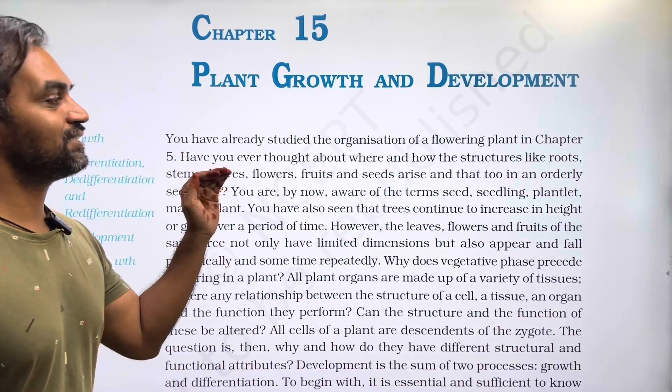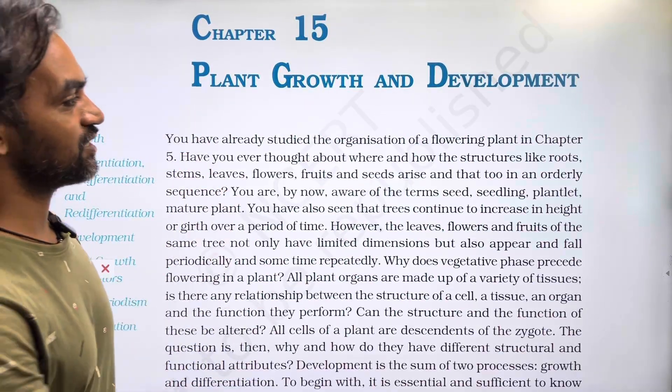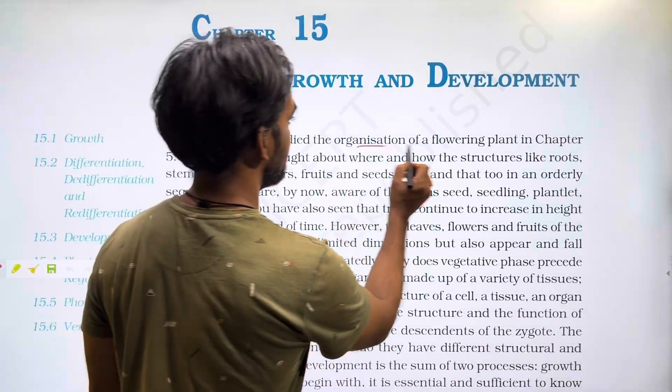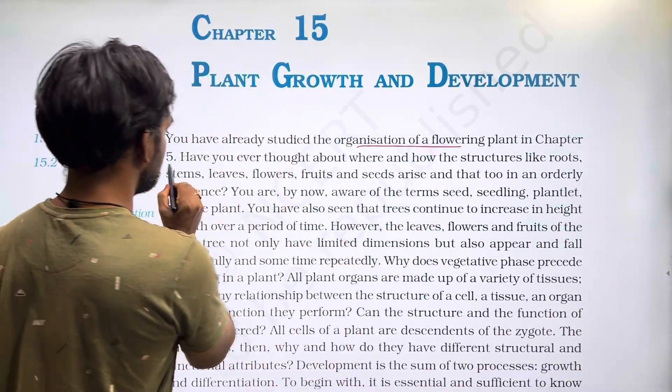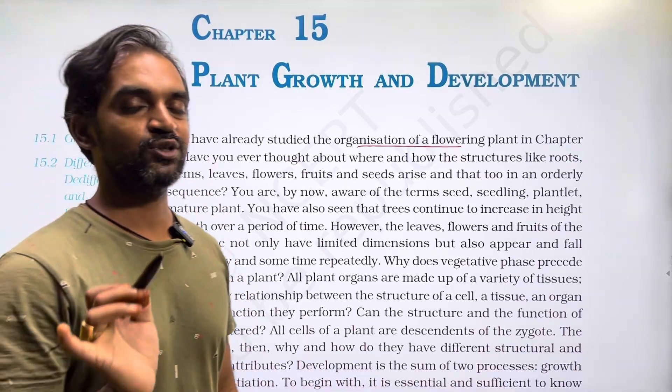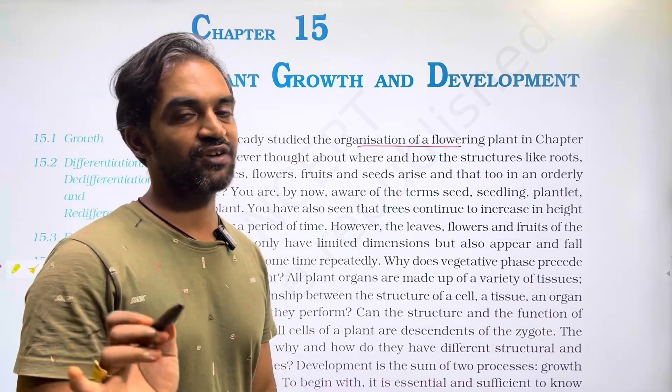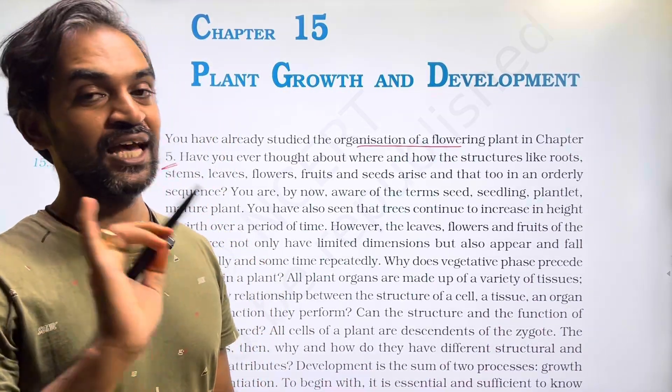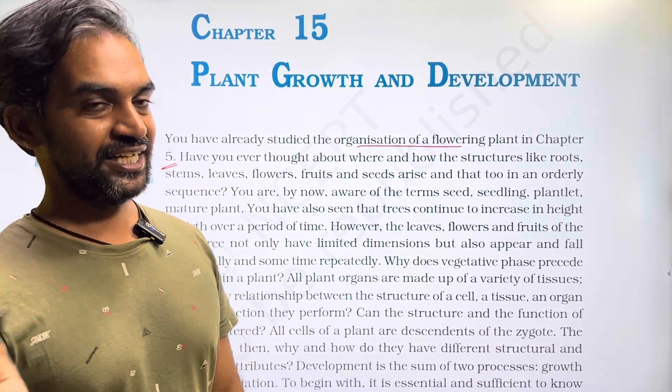You have already studied the organization of flowering plants in Chapter 5 — that is, the morphology of flowering plants: roots, stem, leaf, flower, inflorescence, and seed.